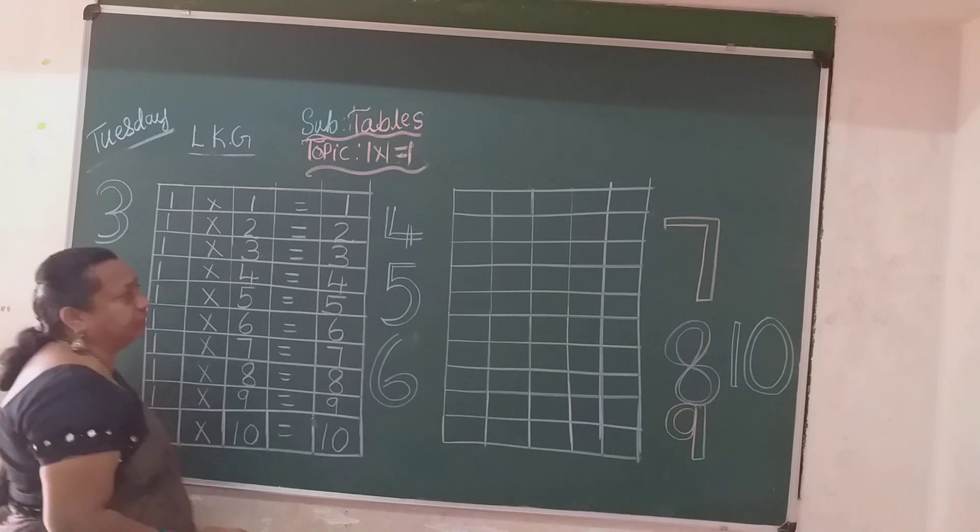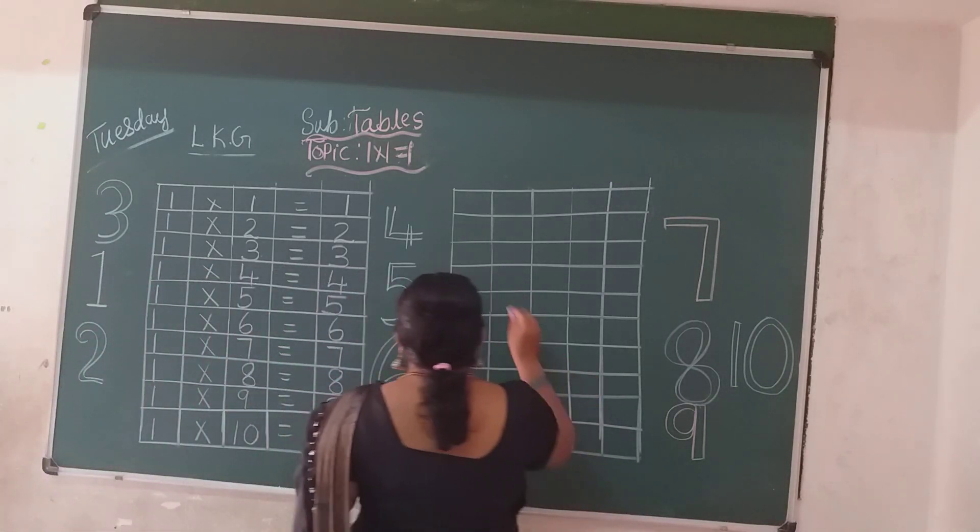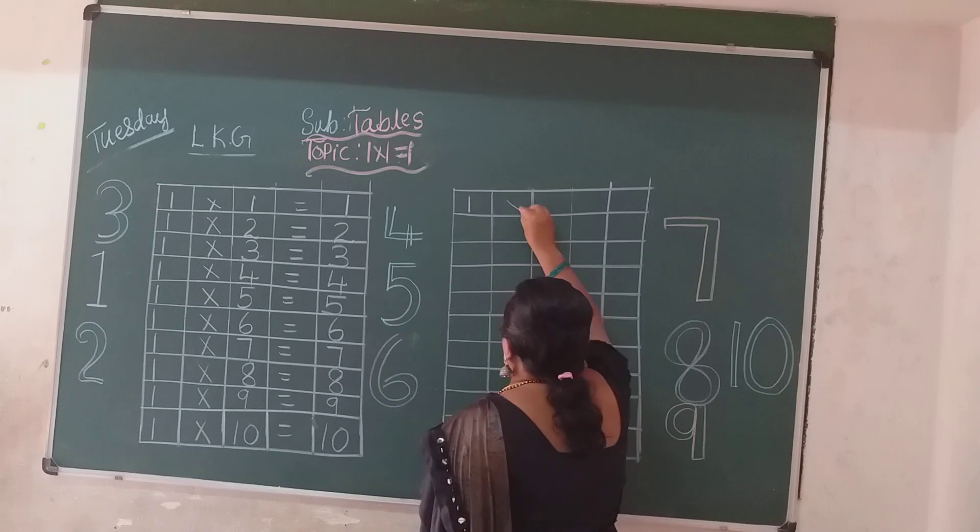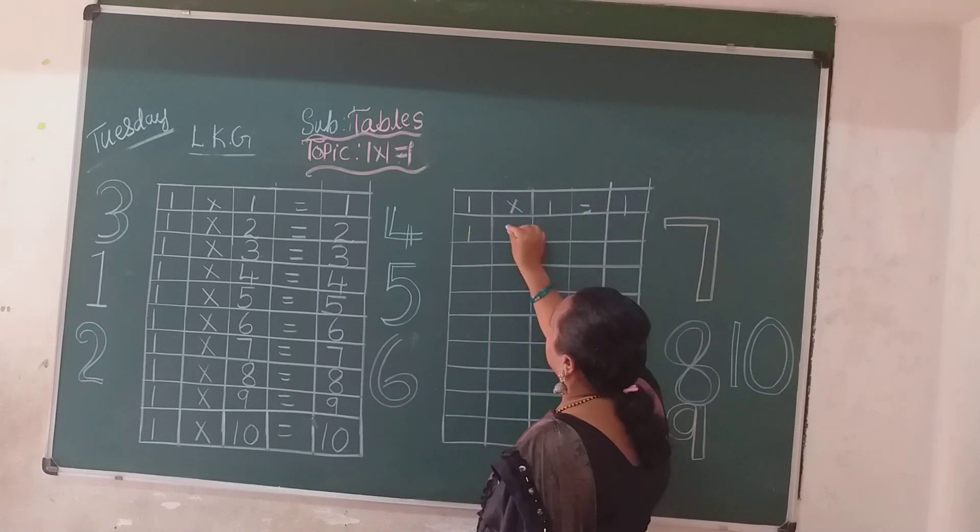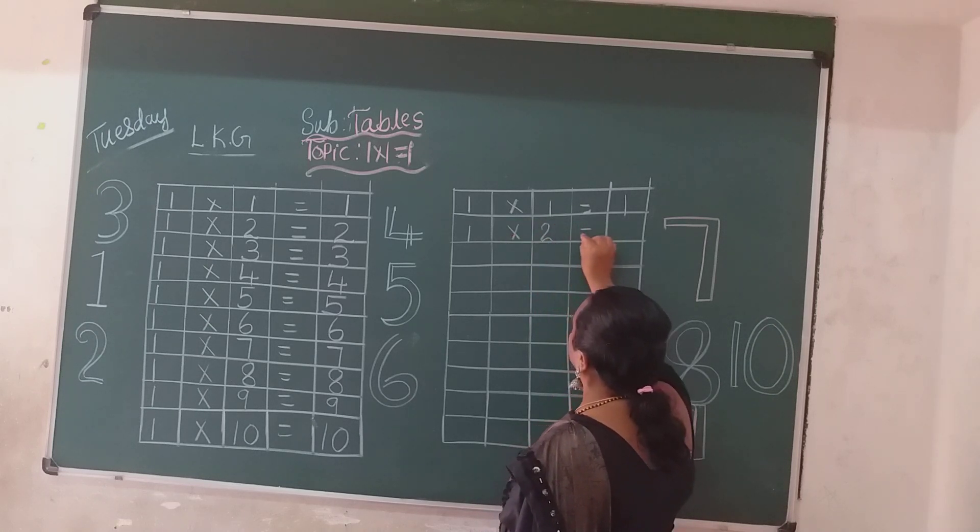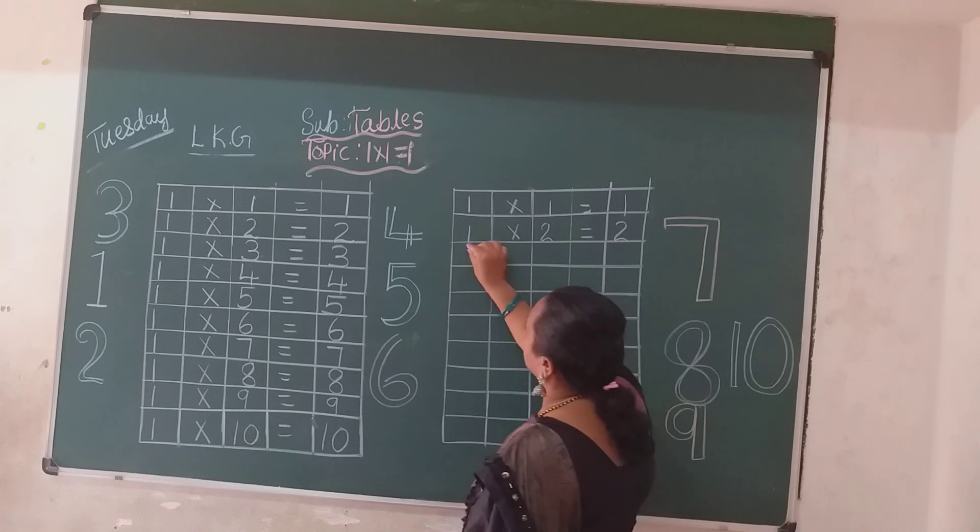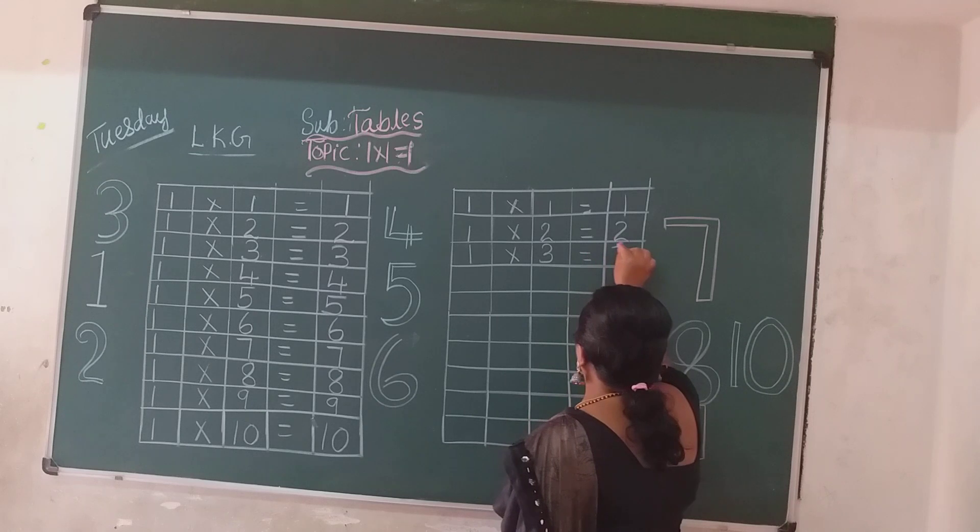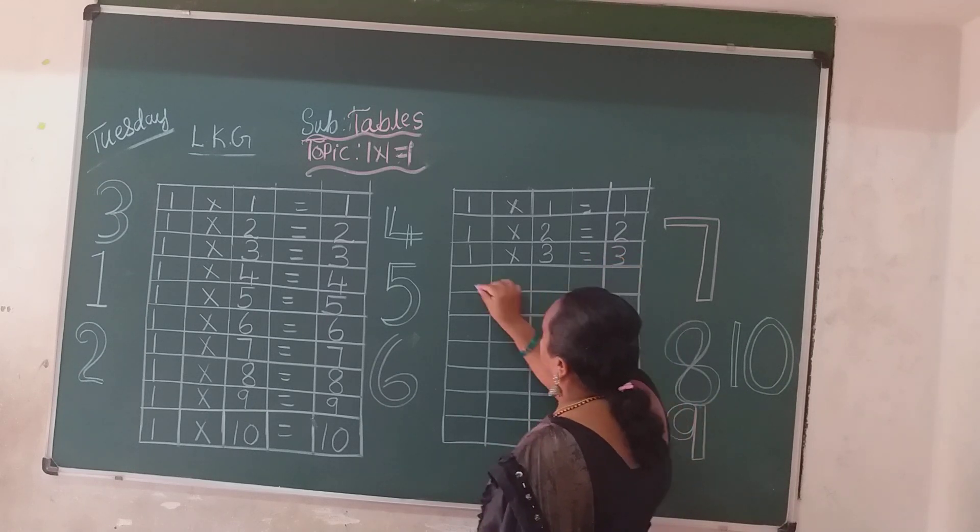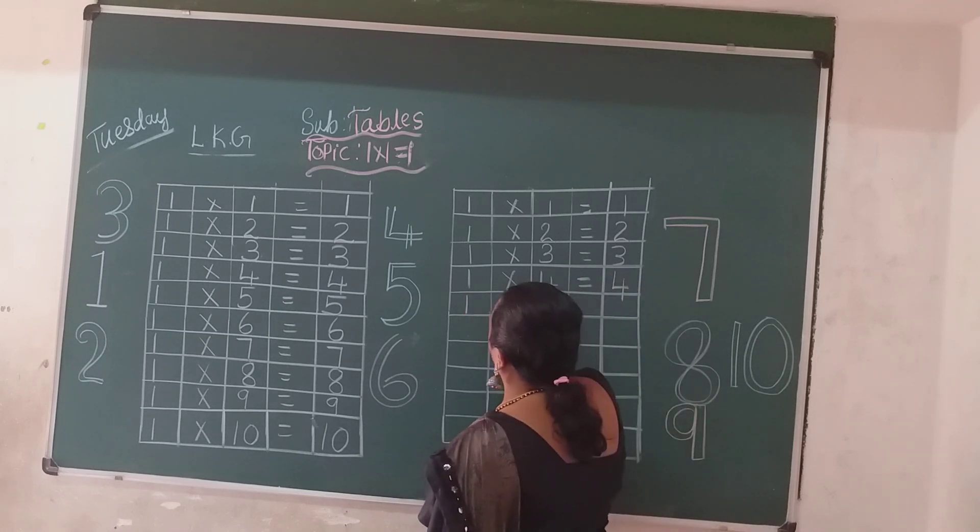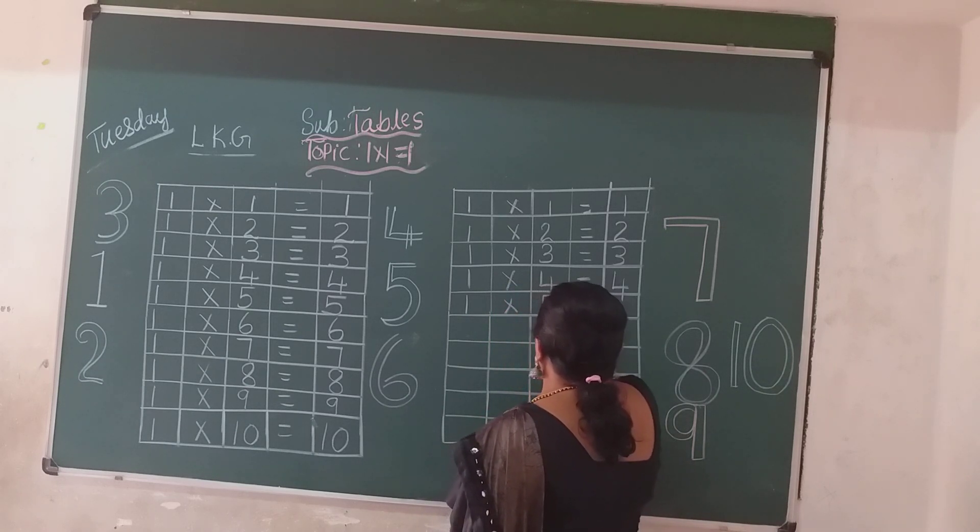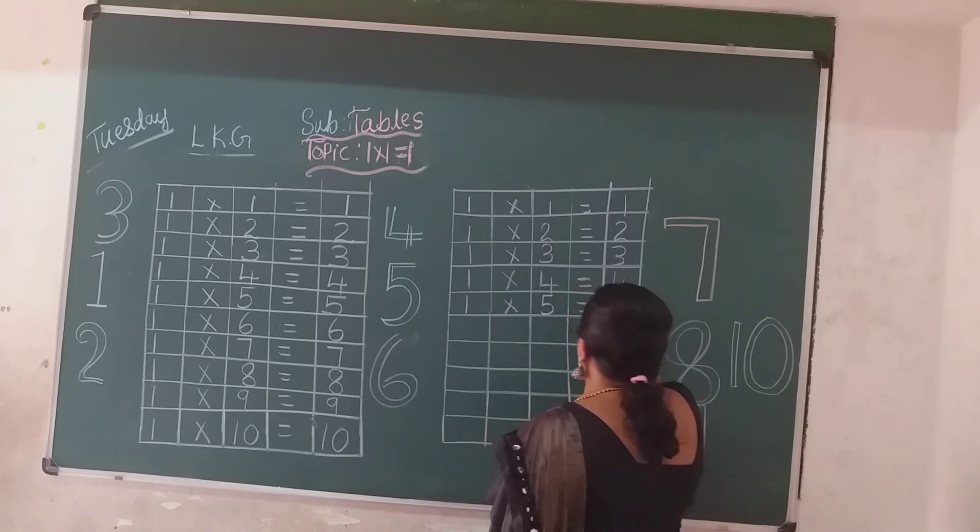Next children, one more time you can write. Say it right, children. One ones are one. One twos are two. One threes are three. One fours are four. One fives are five.